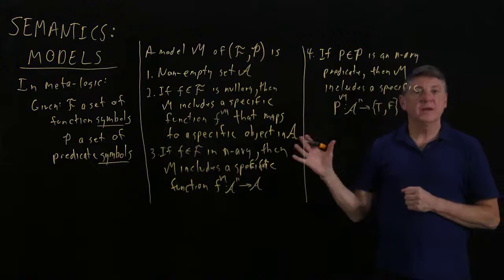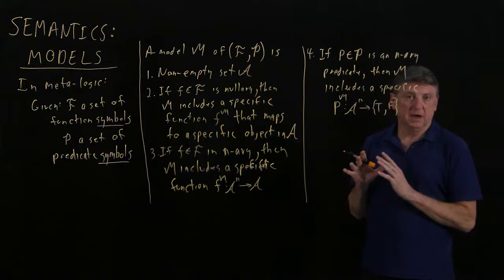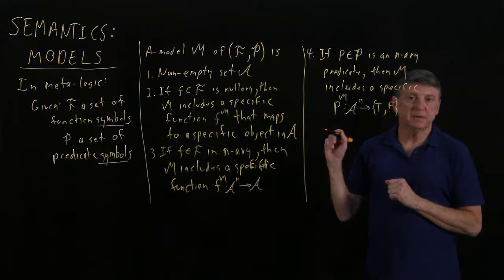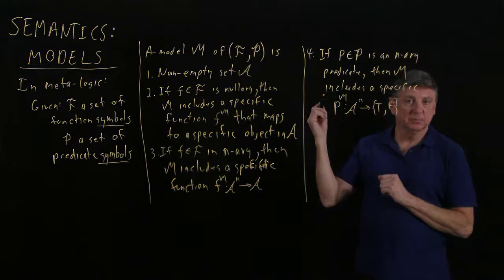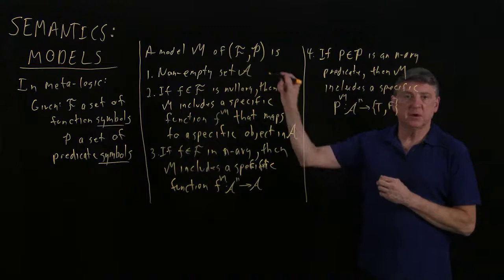And when taken together, these are what we mean by a model of the function symbols and the predicate symbols. That is, you may be thinking of a particular function and predicate when you're writing your logic. What a model does is it makes that specific. When we specify a model, we're providing particular functions and particular predicates that will let us ground it. And all of these depend on the particular domain of discourse, or set A. This is the definition.